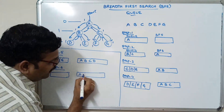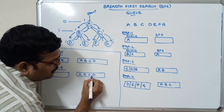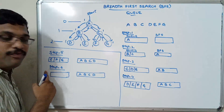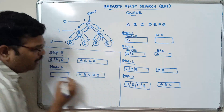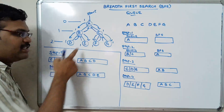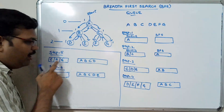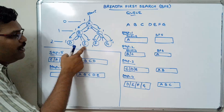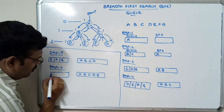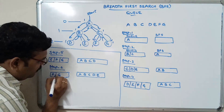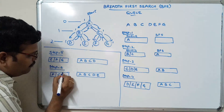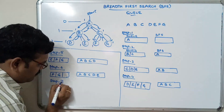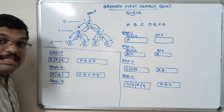Step six: remove the element from the front end — E is removed and placed in BFS, giving A, B, C, D, E. We need to insert all adjacent nodes of E into the queue, but E has no adjacent nodes, so ignore. There are only two elements remaining in the queue: F and G.